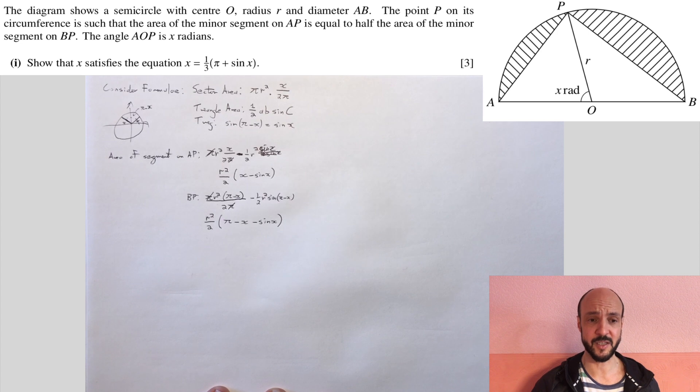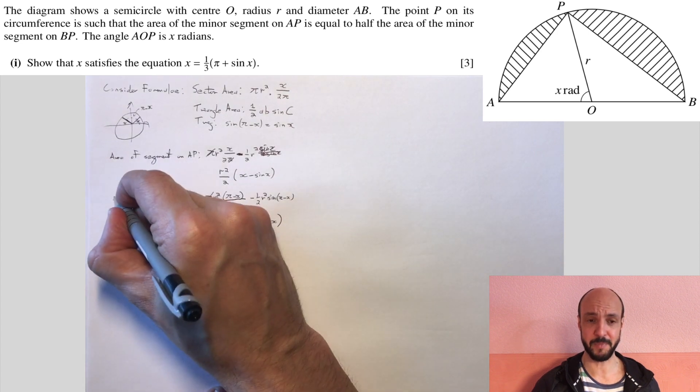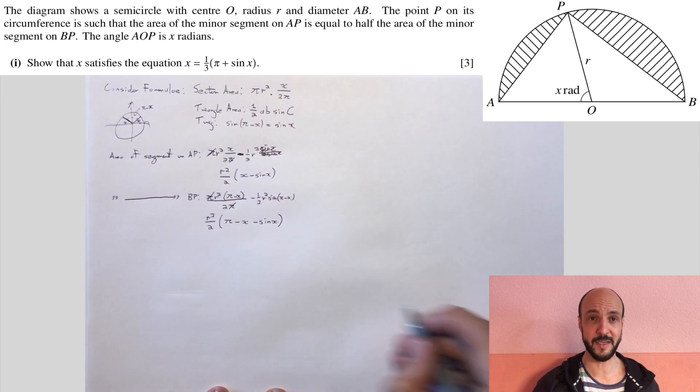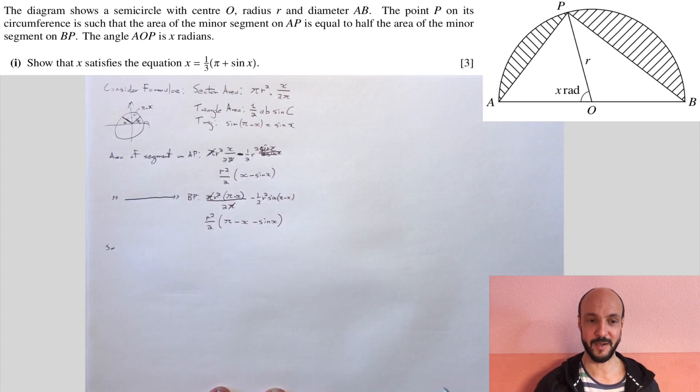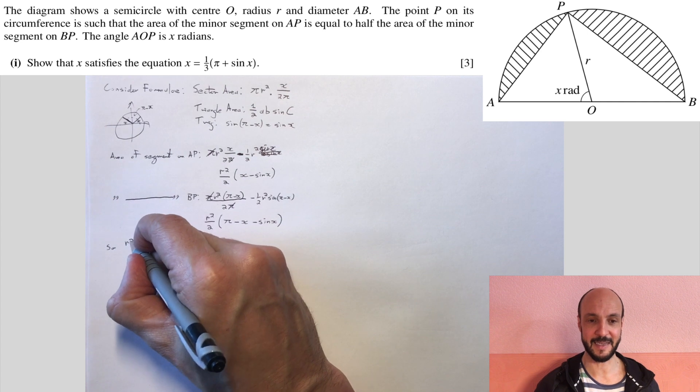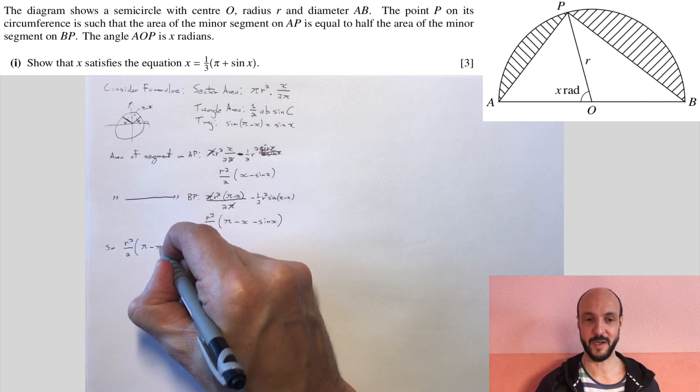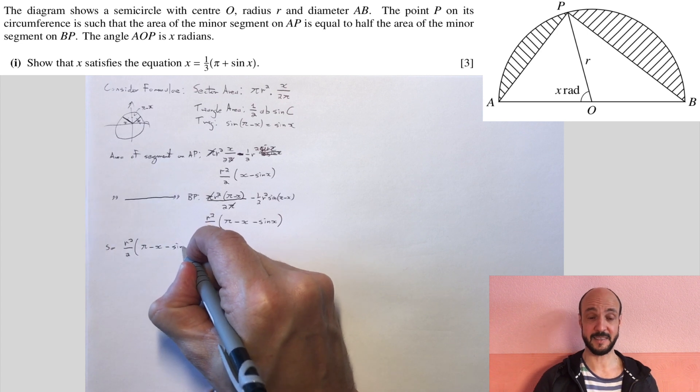Now we're told in the question that the area of the segment on BP is twice the area of the segment on AP. And this is the equation that we're going to write down, that r squared over 2 pi minus x minus sine x from above is equal to 2 times by r squared over 2 times by x minus sine x.